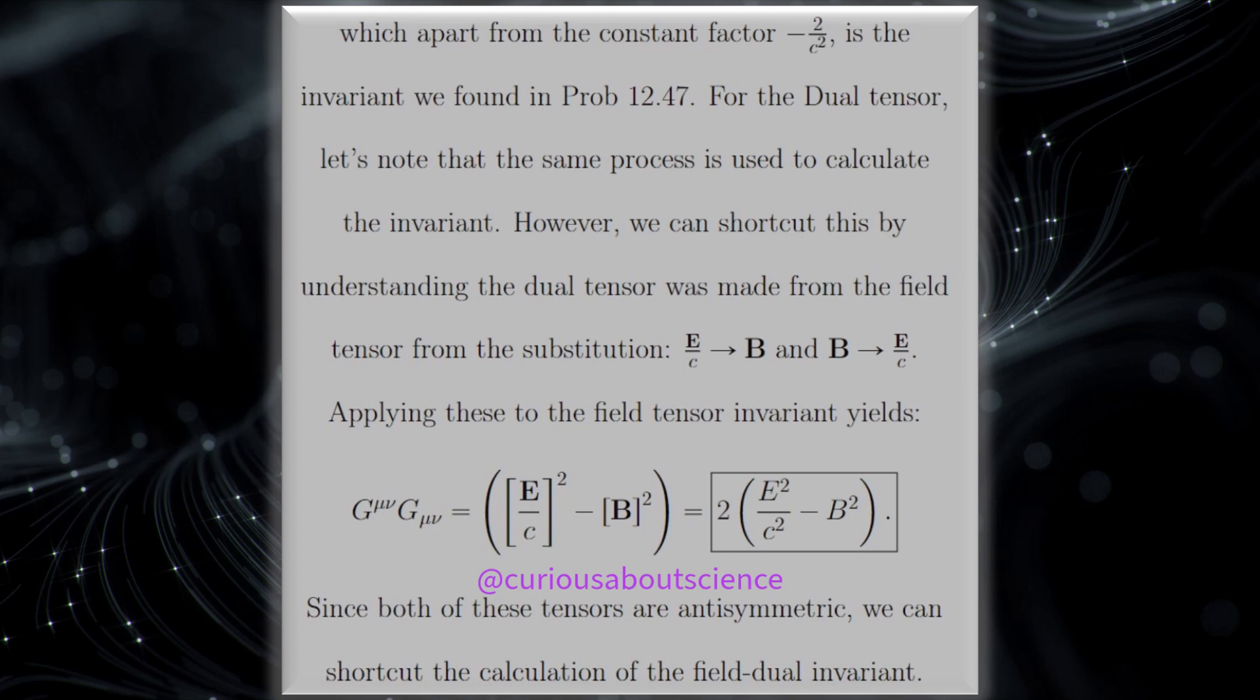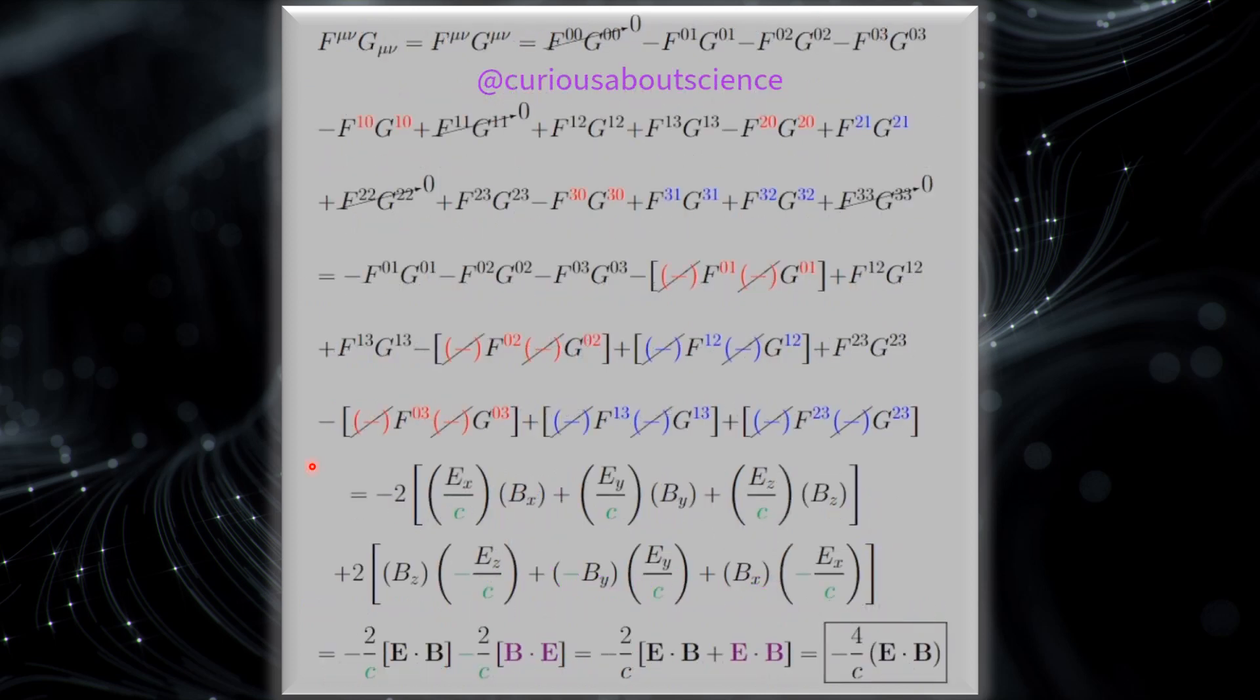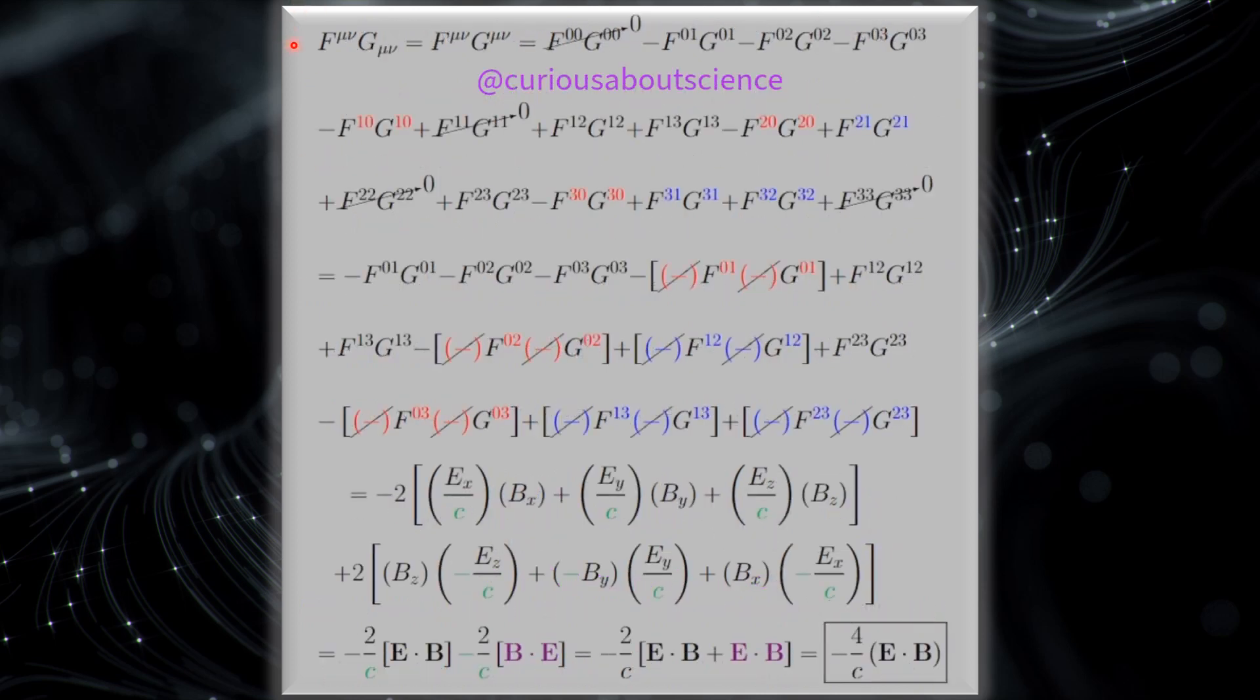Since both of these tensors are anti-symmetric, we can shortcut and calculate the dual tensor invariant. We can shortcut the calculations of the field dual invariant as such. So here, we have to do the same procedure. We have to put this for the counter invariant, so we put the negative signs where we need to, double negative here, negative, negative, all that stuff.